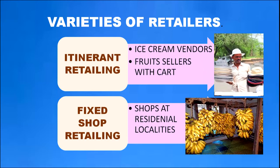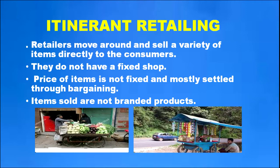Retailers who have a shop in a fixed place are included under fixed shop retailing. Itinerant retailers move around and sell a variety of items directly to consumers. They do not have a fixed shop, price is not fixed and is mostly settled through bargaining, and items sold are not branded products. Vegetable sellers who come to your house using vehicles with wheels are examples of itinerant retailers.